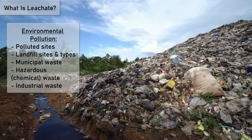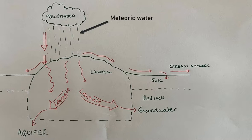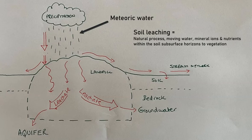When it rains on a landfill site, the water that's meteoric in origin is going to infiltrate, percolate, and move through the landfill just like it does in soil — which is leaching. Leaching is a natural process of transferring nutrients and water to different sub-horizons and layers of soil.